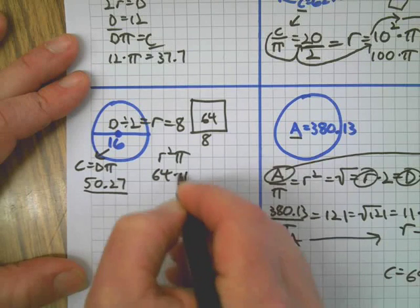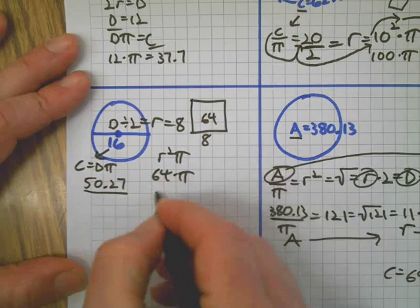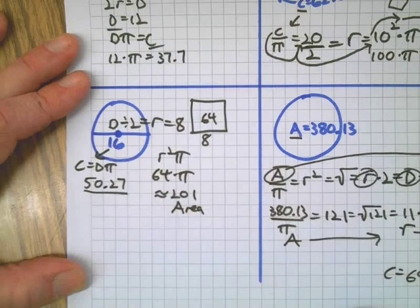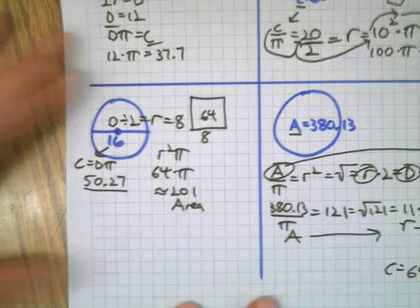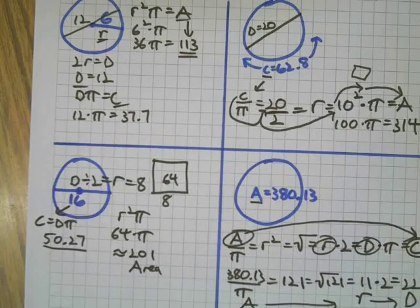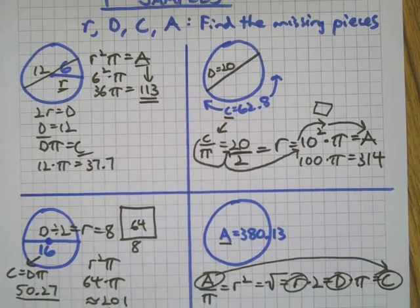Then we're going to make a square, that's radius squared times pi. So it's going to be 64 times pi, which is about 201 for the area.